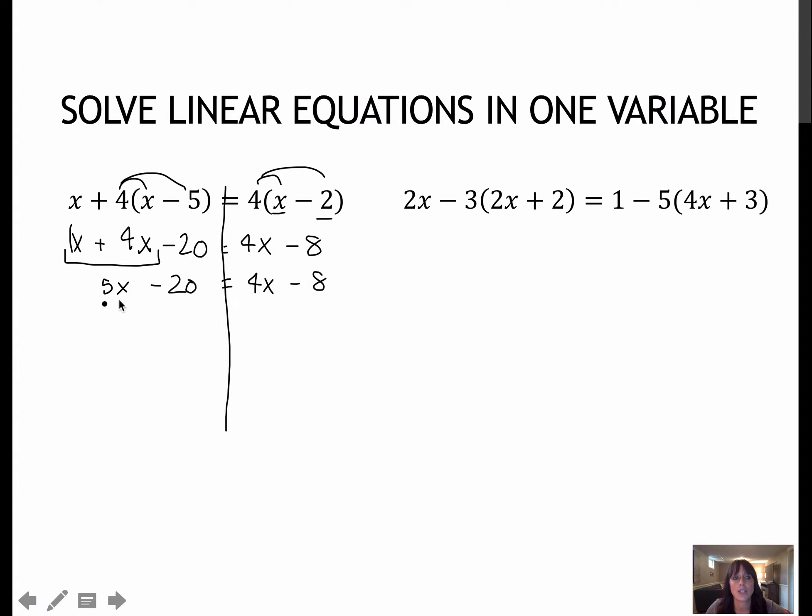Now I typically like to get all of my x's to one side before I deal with the minus 20 or the minus 8. So in my case I'm going to subtract 4x from each side because that's going to give me a positive x value on the left side. So I prefer to deal with positive numbers. Remember when I bring down minus 8, I must keep the negative with it. Now I'm going to add 20 to each side, and that gives me x equals 12. Remember that I can plug 12 back in to check to see if it works.